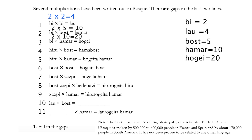In equation 4 we have 'hiru' times 'bost' equals 'hamabost'. We now know that 'bost' is 5 and 'hamar' is 10. We can easily infer that 'hamabost' is 15, in the form of 10 plus 5. Therefore 'hiru' must be 3. We also know that everything we've done is correct, because only multiplying something by 5 will give you a two-digit number ending with the same digit it is multiplied by. Moving on, equation 5 further confirms it as 3 times 10 equals 30, and 'hogeita hamar' is 30 — one number means 20 and the other means 10, so they are added together.